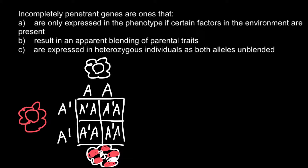Another example is the ABO blood group system. When one parent homozygous for blood group A (genotype AA) is crossed with one homozygous for blood group B (genotype BB), all the progeny would be AB. This is also co-dominance — both alleles are expressed simultaneously, resulting in two proteins present on the surface of red blood cells.